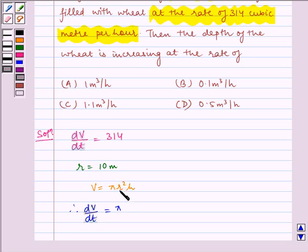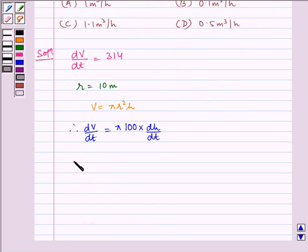Since r equals 10, r squared equals 100. So dV/dt equals 100 pi dh/dt. Given that dV/dt is 314, this implies 314 equals 100 pi dh/dt.